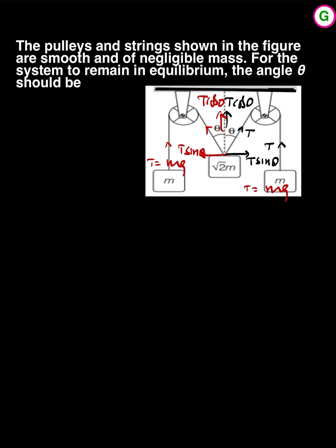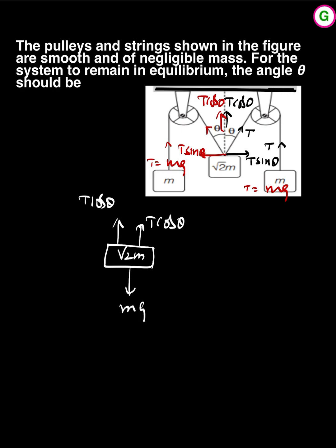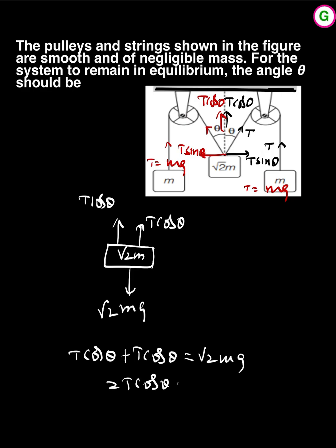Since root 2 m is in equilibrium, the sum of upward forces equals the downward force. The upward forces are T cosine theta and T cosine theta, which should equal root 2 mg. Along the horizontal, T sine theta and T sine theta cancel. So T cosine theta plus T cosine theta equals root 2 mg.